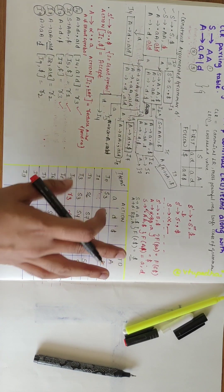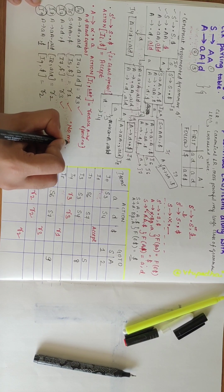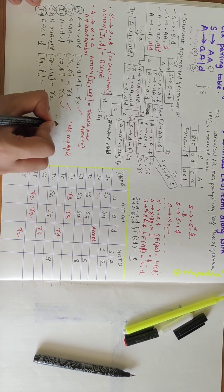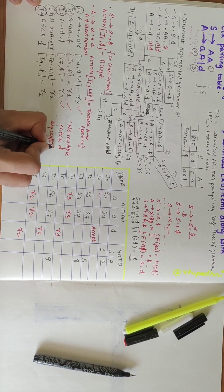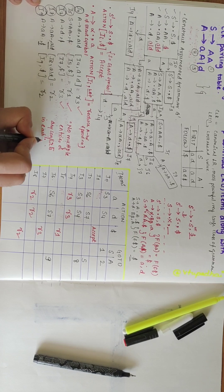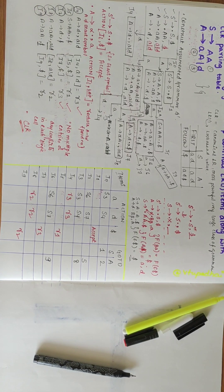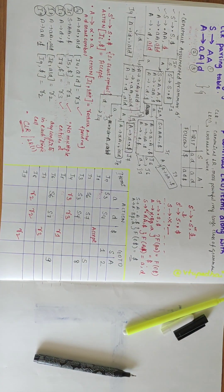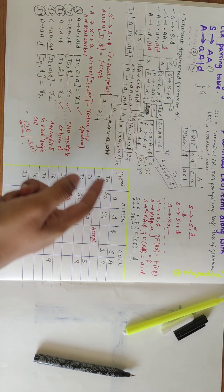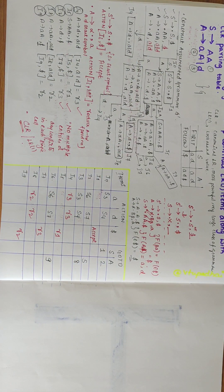I am done filling the values in the table. Looking at the parsing table, there are no multiple entries or any conflicts occurring in any single cell. So I can say that the given grammar is CLR or LR1. I hope you have understood how to find the LR1 items and check if the given grammar is CLR or not. If you have any doubts, let me know in the comments and subscribe to my channel.